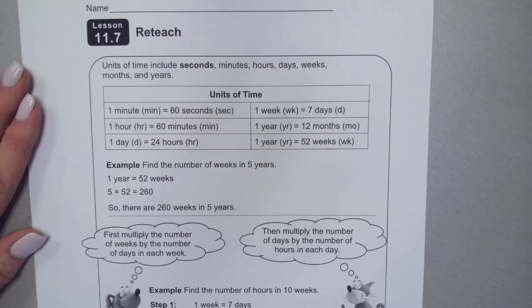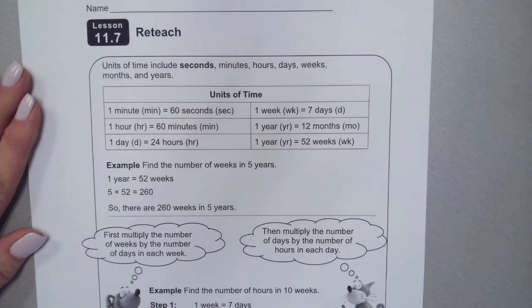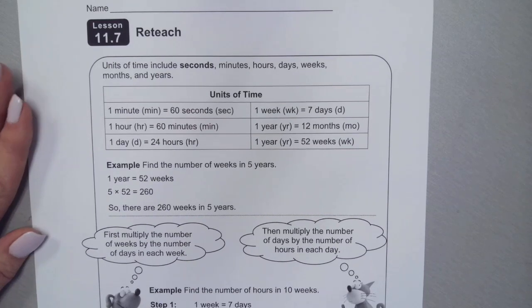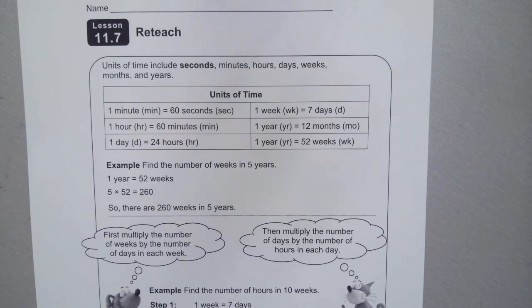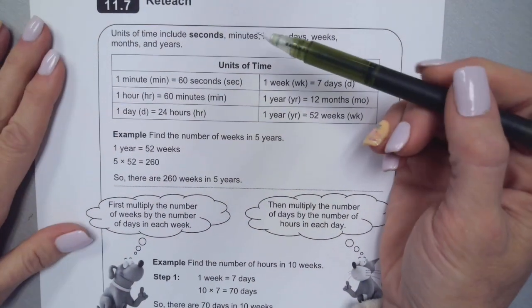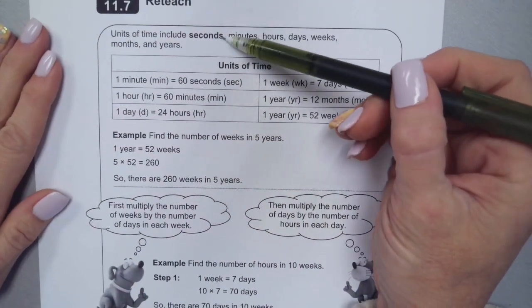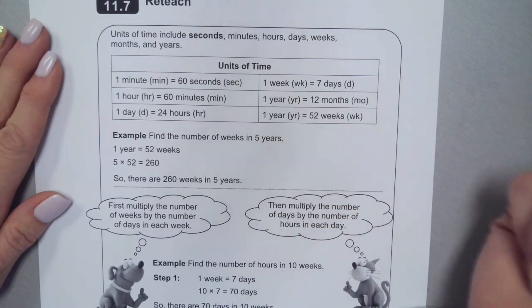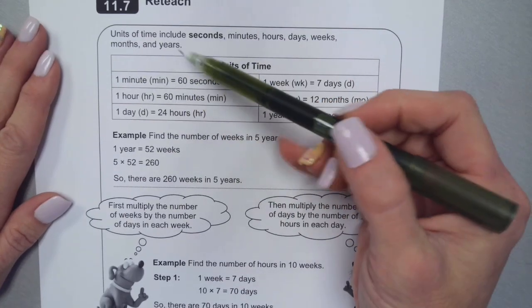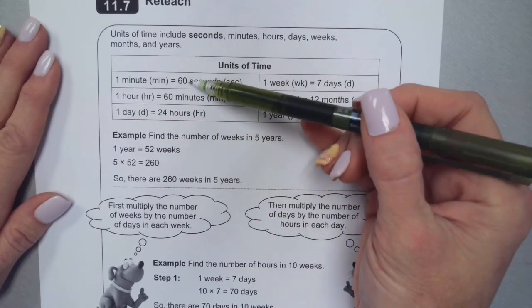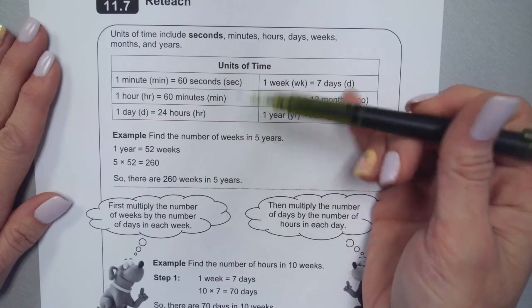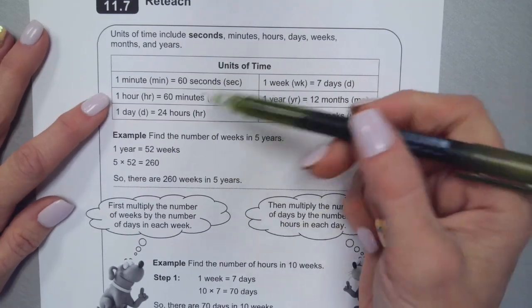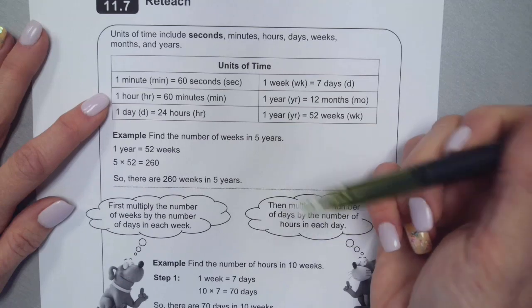All right, we're going to continue our study of converting units of measure. Yesterday we looked at how to display data on a line plot, and today we're going to talk about units of time. We're thinking about seconds, minutes, hours, days, weeks, months, and years. One minute equals 60 seconds, one hour equals 60 minutes, one day equals 24 hours.